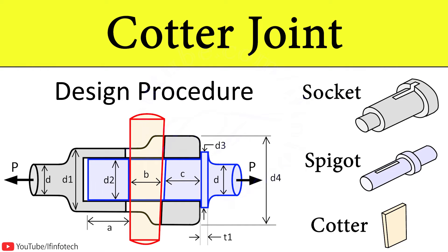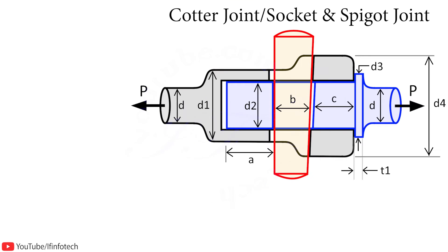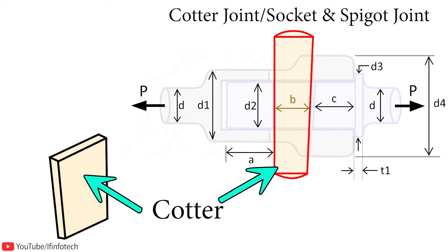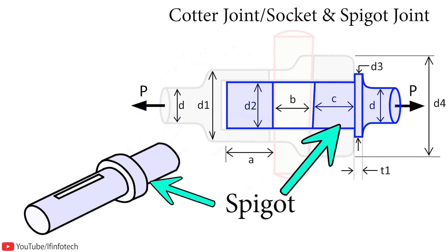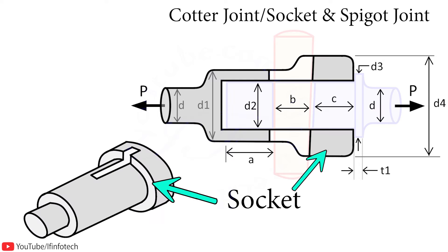In today's session, we'll learn about the design procedure for cotter joint, also known as socket and spigot joint. It consists of three parts: the red colored part is the cotter, inside the socket there is another part called the spigot end shown in blue color, and the third part is the socket.